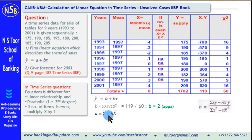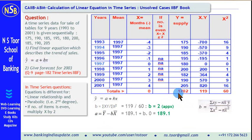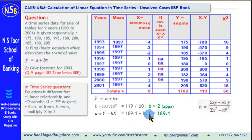Similarly, we calculate the value of a. The formula is a = ȳ − b·x̄. ȳ is the average of y, so we take the total of y = 1702 divided by 9 items, which gives us 189.1. Then b multiplied by x̄: since x̄ = 0, this term is 0. Hence the value of a is 189.1.